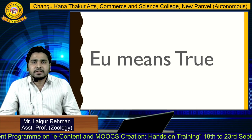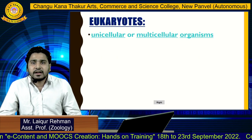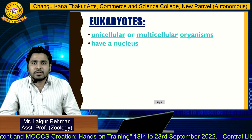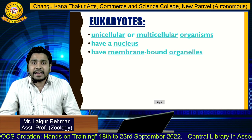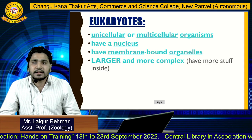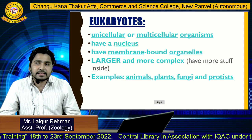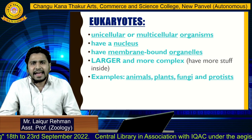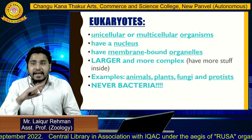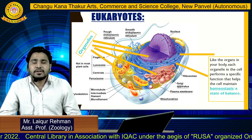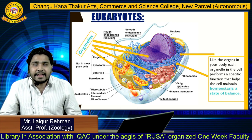'Eu' means 'true.' Eukaryotes are unicellular or multicellular organisms. They have a nucleus and membrane-bound organelles. They are larger and more complex with more structures inside. Examples include animals, plants, fungi, and protists, and they are never bacteria.